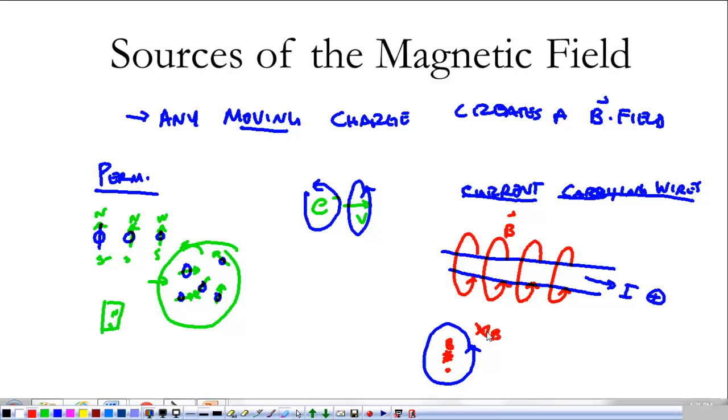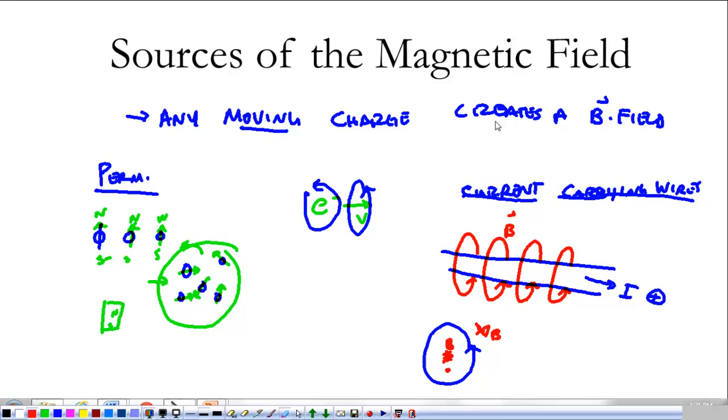If I put a bunch of loops together, I get a real magnet. We looked at that a little bit last year in pre-AP. This is where the magnetic field comes from. What we're going to do is look at how to calculate it. For that, we use the Biot-Savart Law.